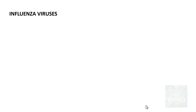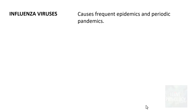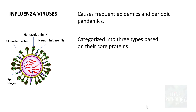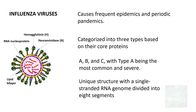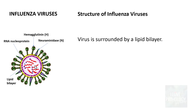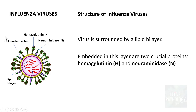Having understood the general aspects, let's look at influenza viruses — viruses that cause epidemics and periodic pandemics. They are categorized into three types based on core proteins: type A, B, and C. Type A is the most common and most severe. They have a unique single-stranded RNA genome divided into eight segments, each coding for different proteins. This is surrounded by a lipid bilayer, in which two crucial proteins are embedded: hemagglutinin and neuraminidase.